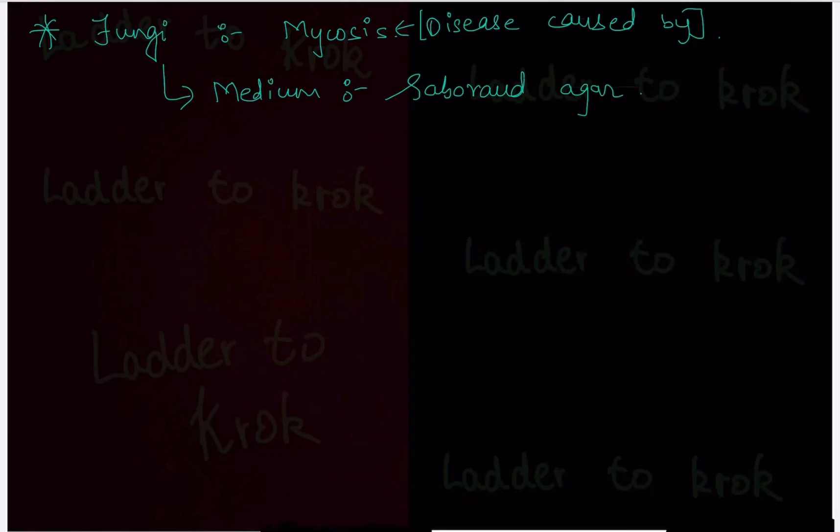The name of the medium is Sabouraud Agar and you should know how exactly this fungi looks if it is cultured in this Sabouraud Agar. It will give you sour and cream-like colonies. So you should remember the characteristic feature of how a fungi looks in Sabouraud Agar. And lastly you should know that fungi shows the property of budding. It is a characteristic feature of fungi. So in the question if they are mentioning the organism shows budding then you should think about fungi.